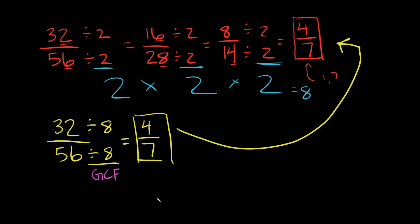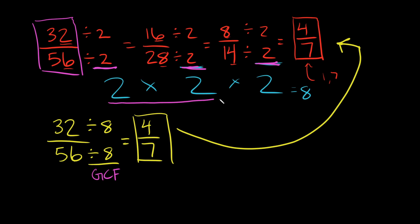So eight is the biggest number that fits into 32 and 56 evenly. If you've got a bigger number and it takes you a few steps to reduce, just make sure at the end you combine all the numbers you divided by — by multiplying them together. That will give you your greatest common factor.